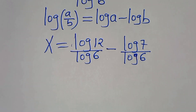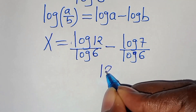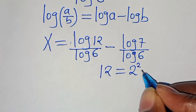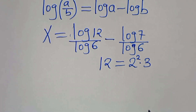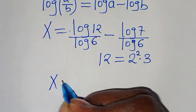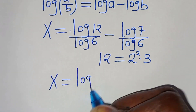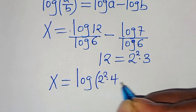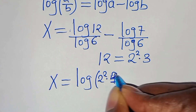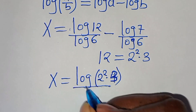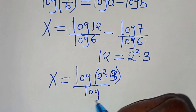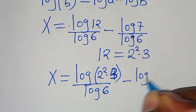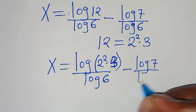Now the next step is that we can express 12 as 2 to the power of 2 times 3. This implies that x is equal to log(2 squared times 3) divided by log 6, subtract log 7 divided by log 6.